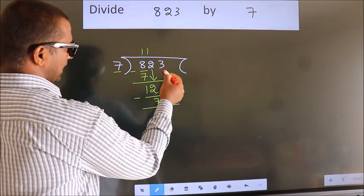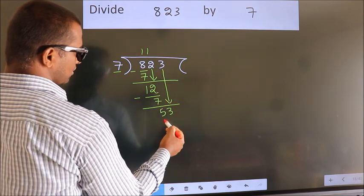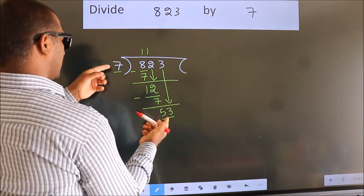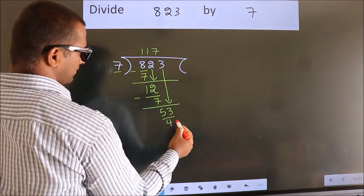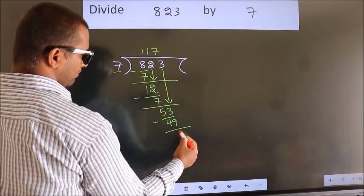After this, bring down the next number. So 3 down. So 53. A number close to 53 in the 7 table is 49. Now we subtract. We get 4.